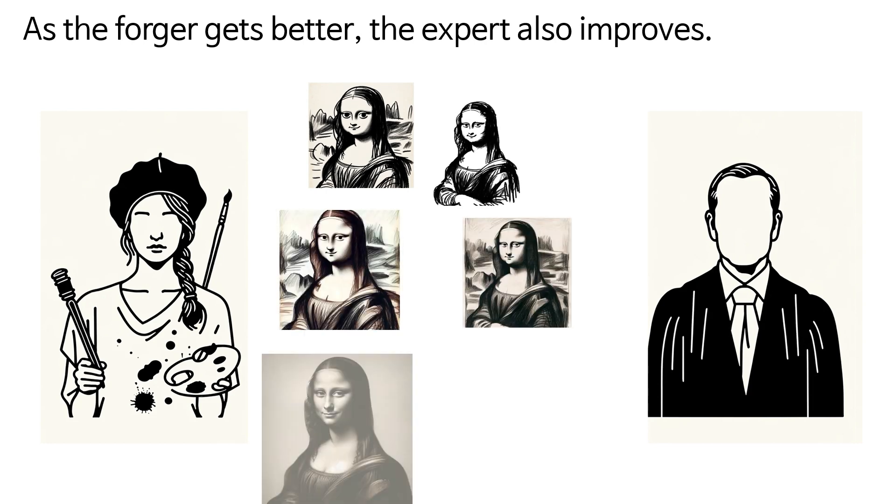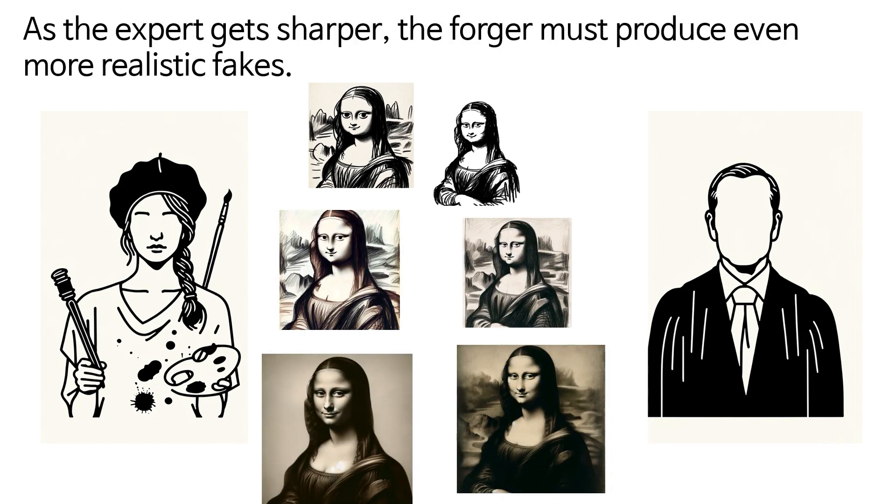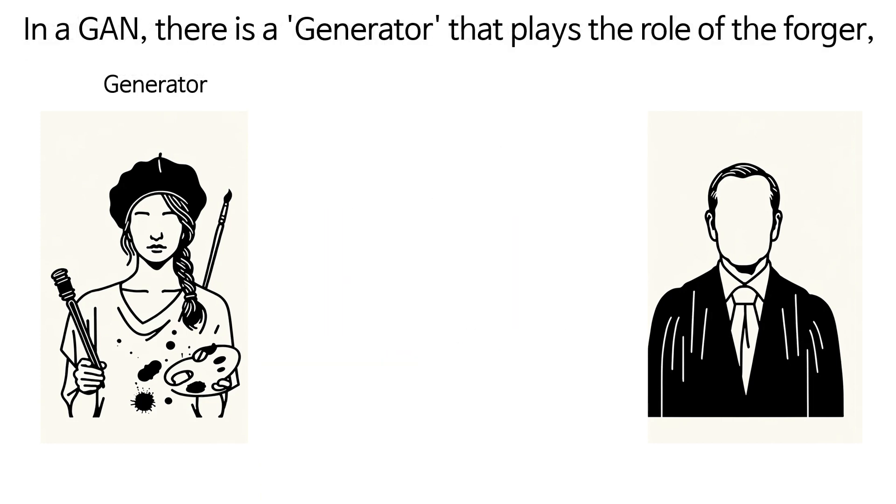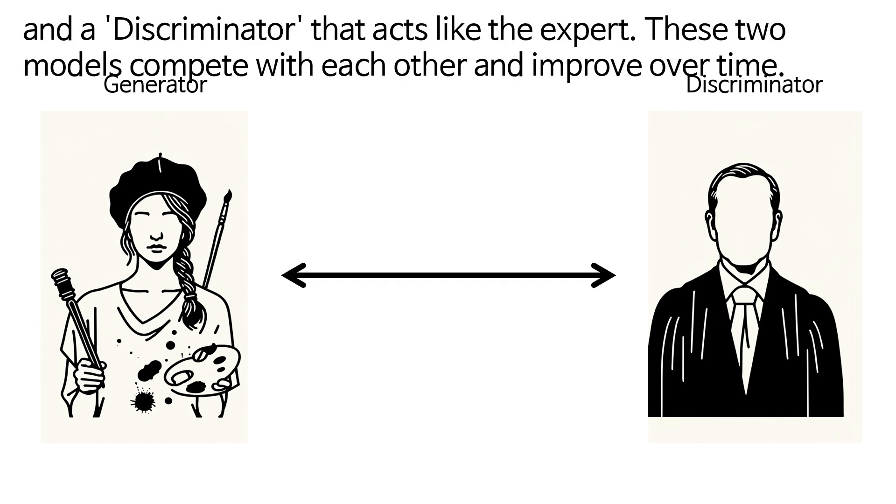As the forger gets better, the expert also improves. As the expert gets sharper, the forger must produce even more realistic fakes. In a GAN, there is a generator that plays the role of the forger, and a discriminator that acts like the expert. These two models compete with each other and improve over time.